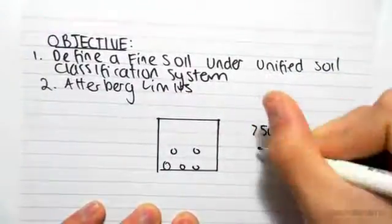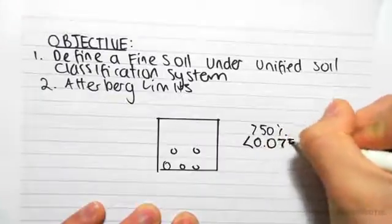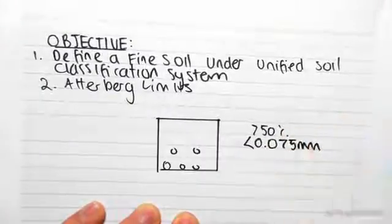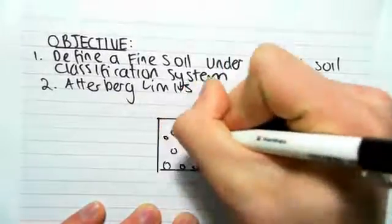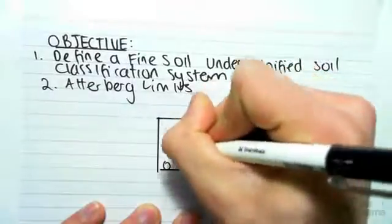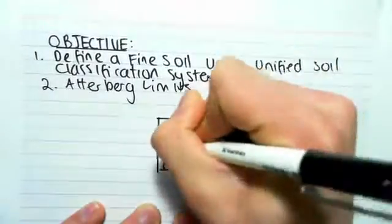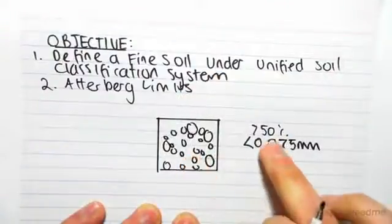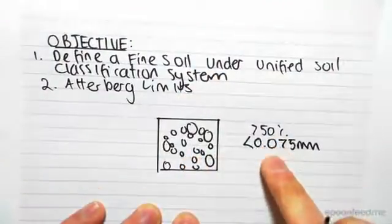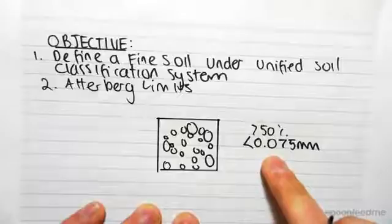has particle sizes less than 0.075 mm in diameter. So we can see that we would have a sample where the majority is these small particles. We could have a couple big ones, but the majority, i.e. more than 50%, has particle sizes less than 0.075 mm.